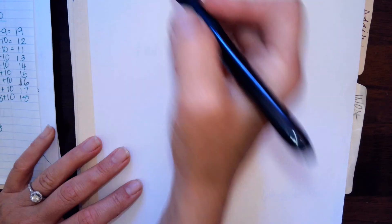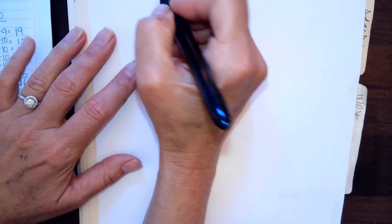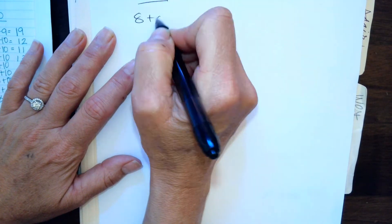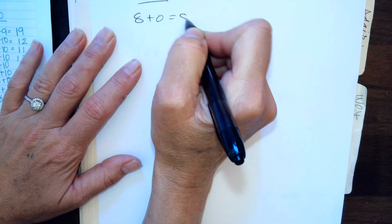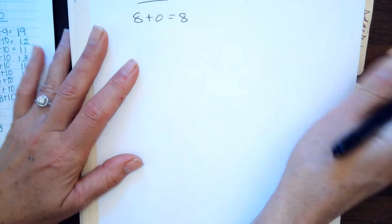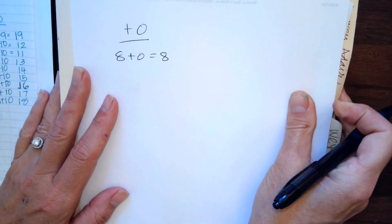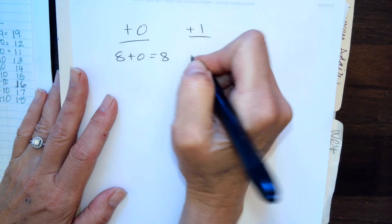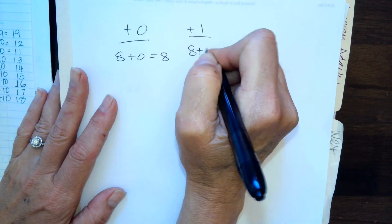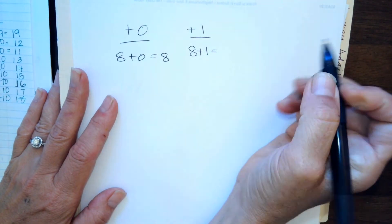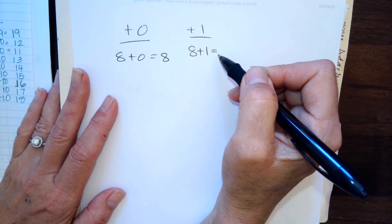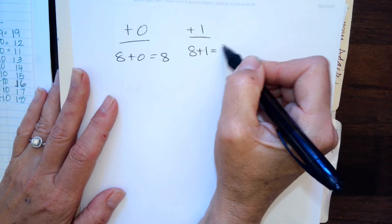So we know our strategy for plus zero. Eight plus zero equals eight — anything plus zero equals itself. Plus one, we go up one to the next number. Eight plus one: what comes after eight? Nine.